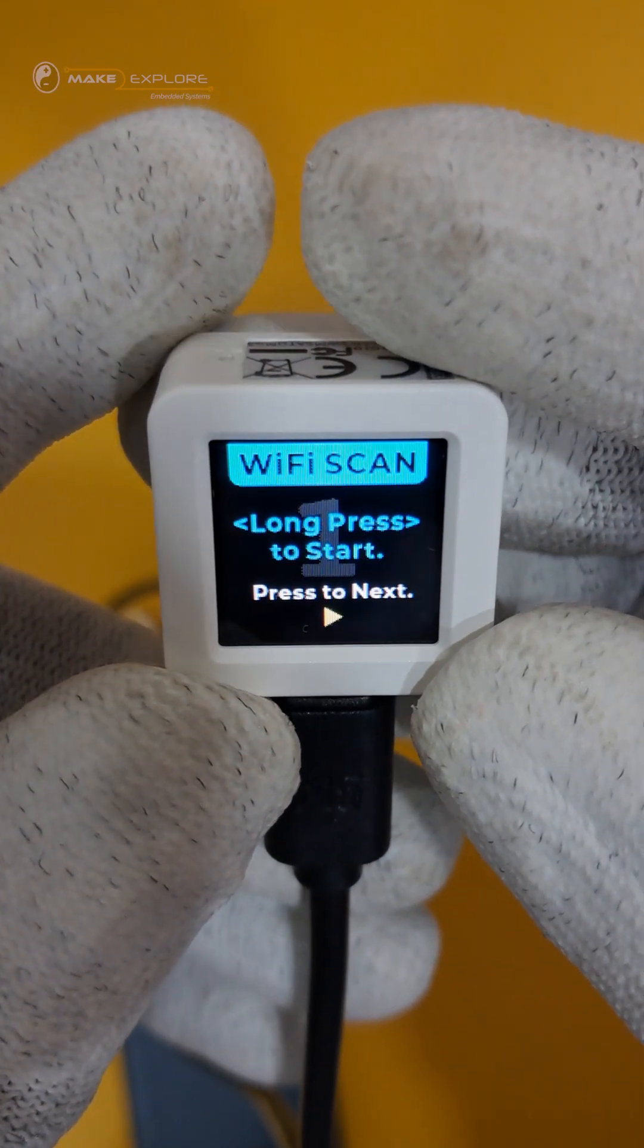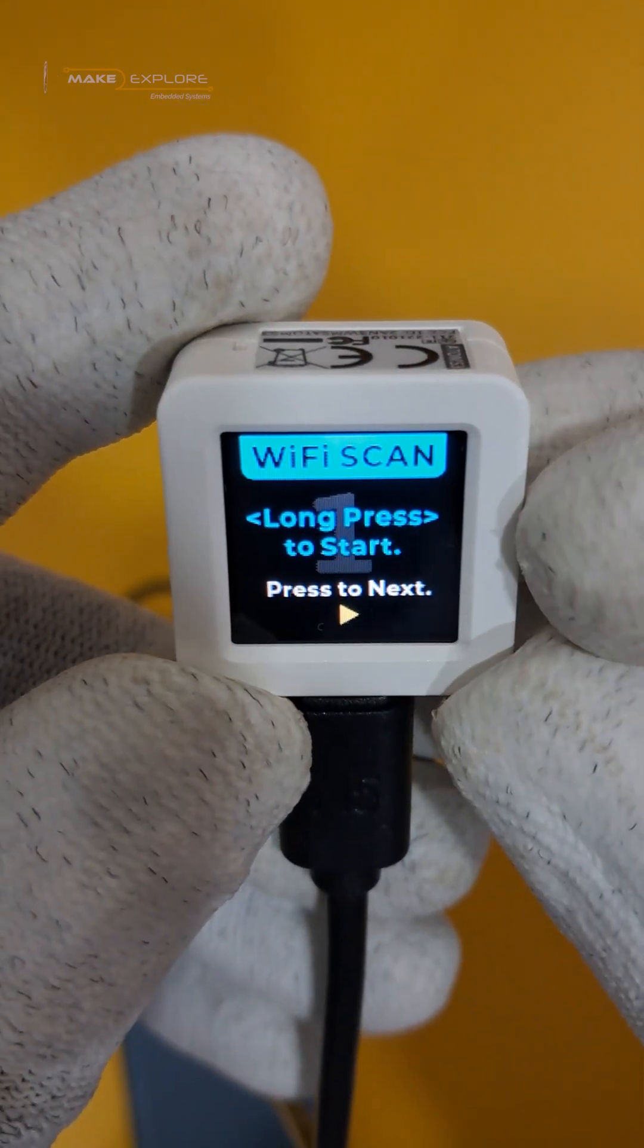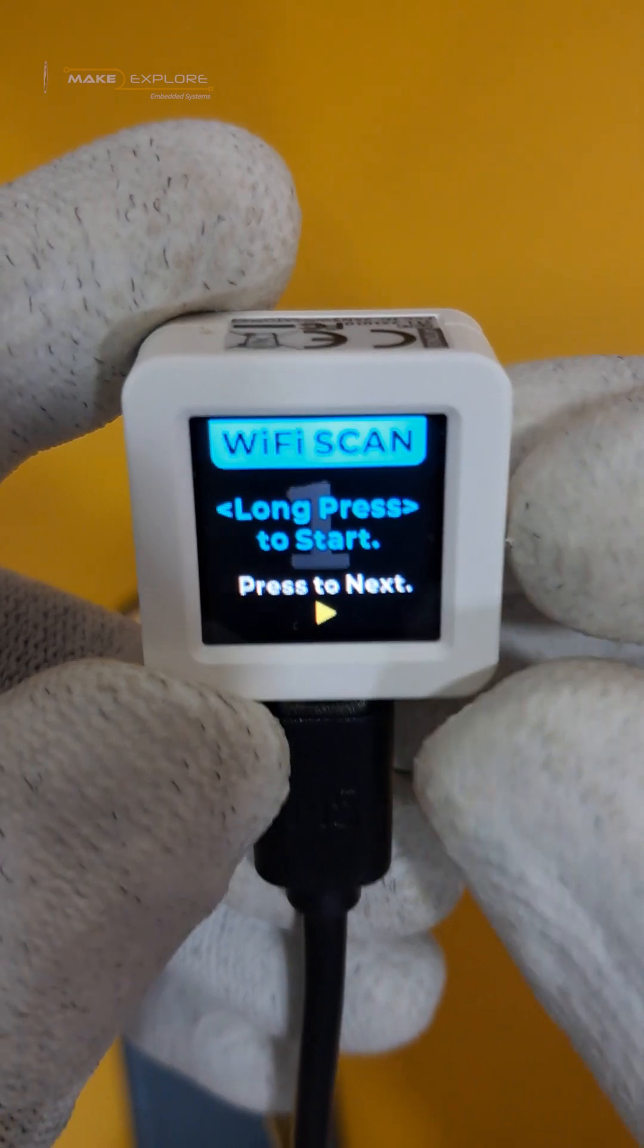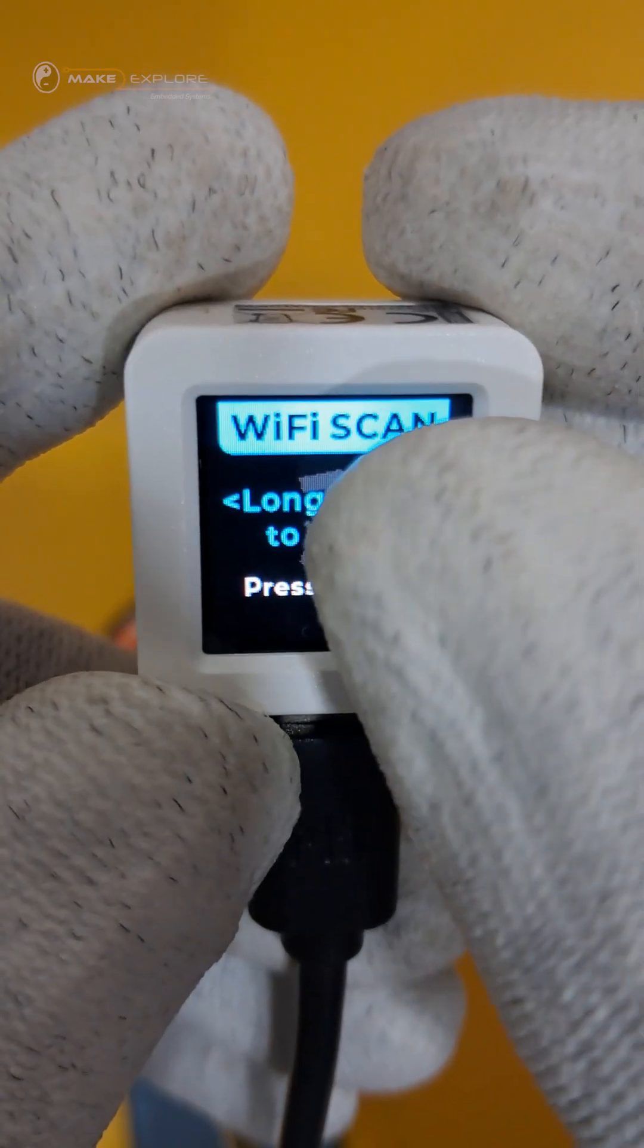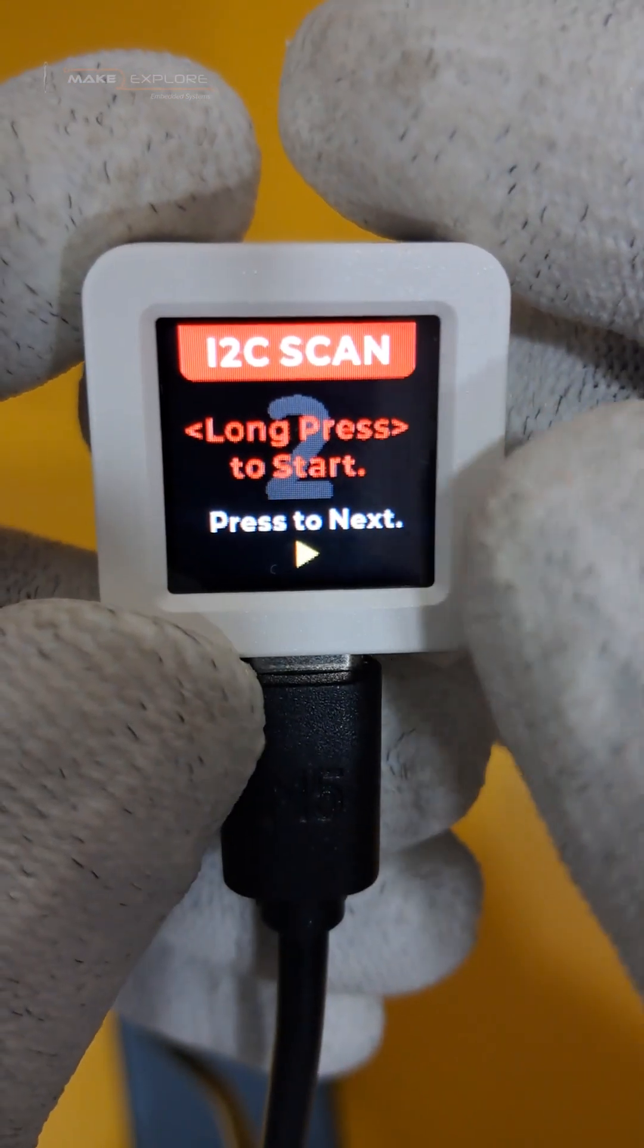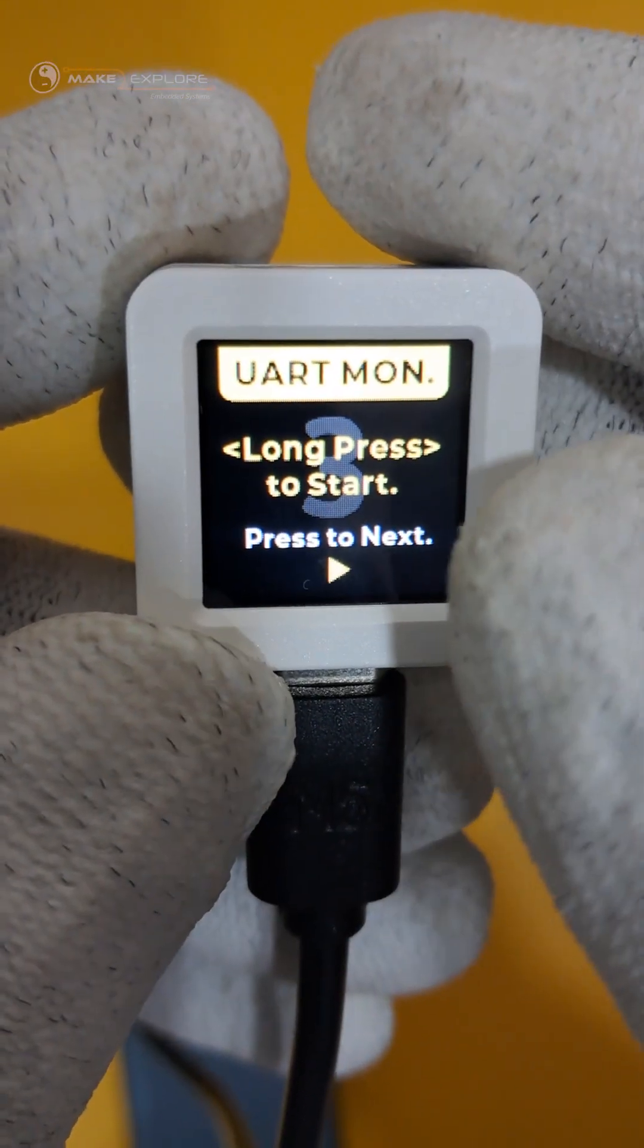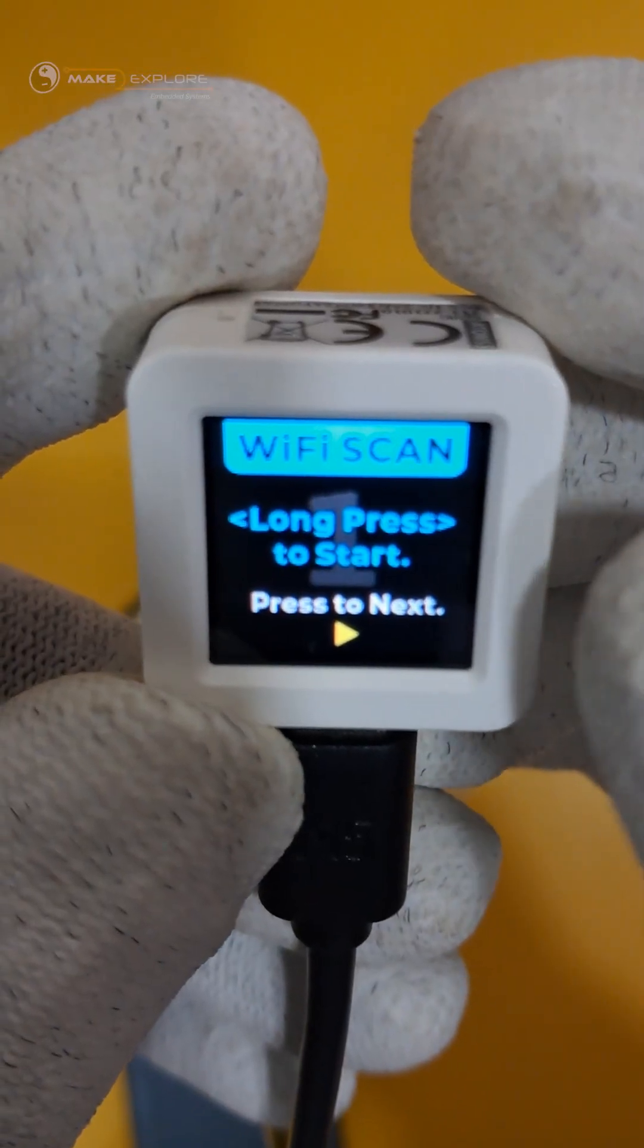Now, let's follow the instructions they have given on the screen. It says WiFi scan. So as we mentioned earlier, below this screen there is a programmable button. We need to press directly on the screen itself to navigate through this compact user interface. To navigate, we have to press once.